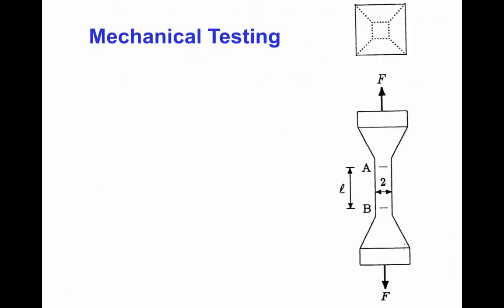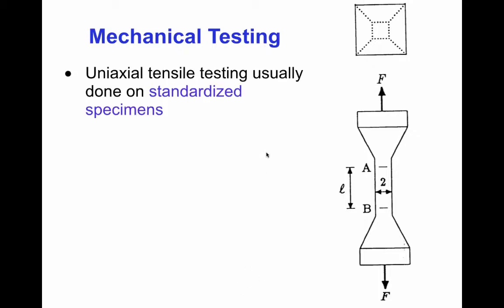The Lamé constants are not usually the quantities that are actually measured in real materials. Different quantities are measured, called the technical constants, and we get different technical constants depending on the kind of mechanical test. The commonest and simplest mechanical test is the uniaxial tensile test, usually done on a standardized specimen that is wider at the ends to avoid stress concentrations and to ensure that the specimen fails in the central portion. That central portion, labeled with length L, is called the gauge length, because that's where the strain gauges are mounted.